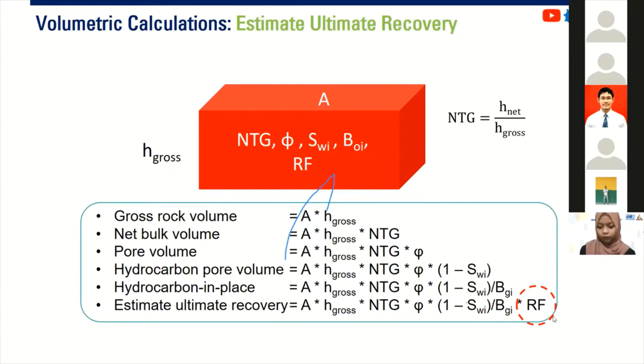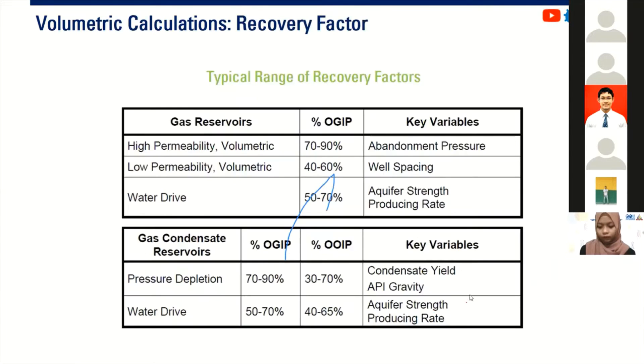For typical values for recovery factors in gas reservoir, for high permeability and volumetric reservoir, we can reach up to 90 percent depending on our abandonment pressure. In low permeability reservoir for volumetric, it will be more challenging. So maybe we can produce up to 60 percent depending on our well spacing.